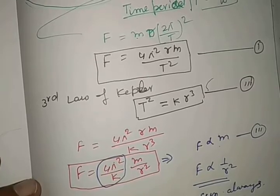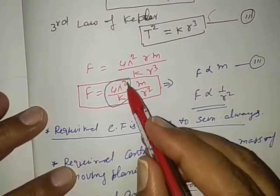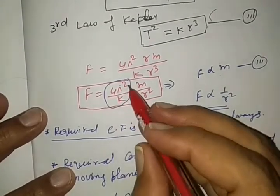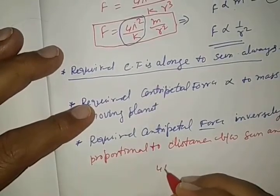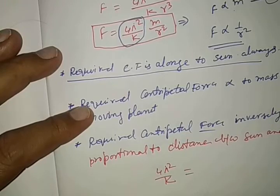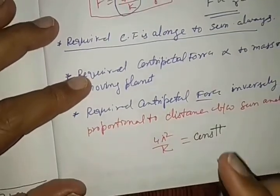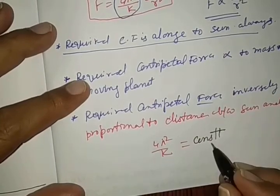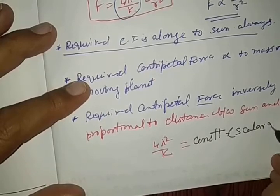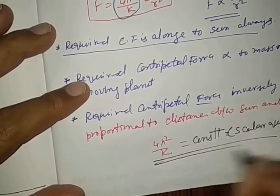Here in this whole concept, the constant which is obtained here, 4 pi square by k. This is constant, one thing, constant. 4 pi square by k is a constant, and it is scalar quantity.